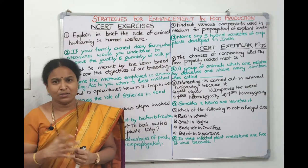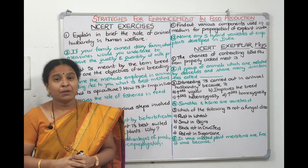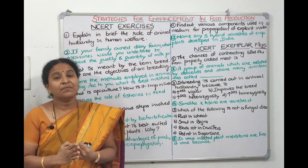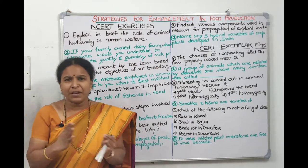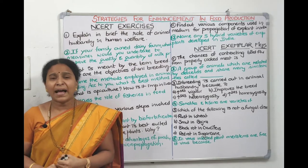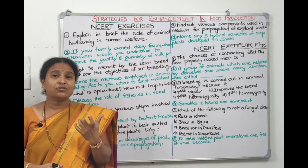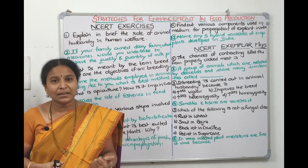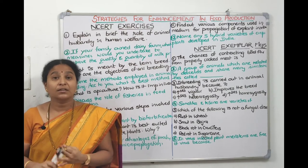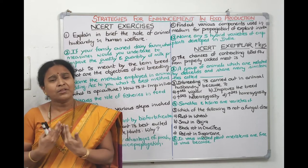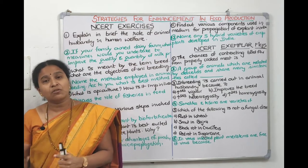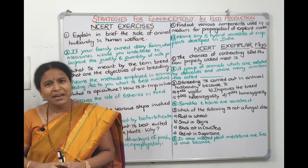From honeybees we get honey, which acts as a sweetener and is used in Ayurvedic medicines. Beeswax is used in cosmetic preparations, and bee venom is used in the treatment of rheumatoid arthritis. From fisheries, fish, prawn, and crab provide meat. Fish waste can be used as manure and fertilizer. Male cattle, called drought animals, can be used in agricultural farms for bullock carting.